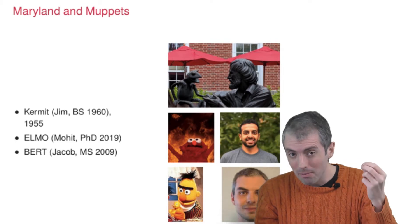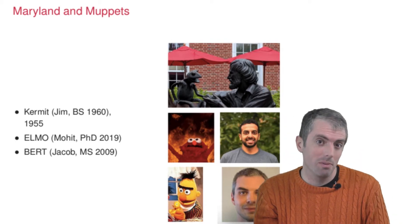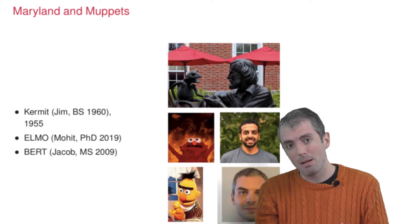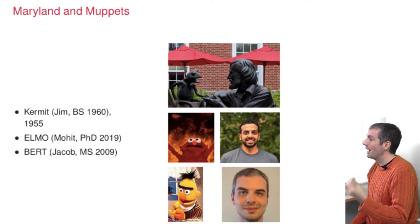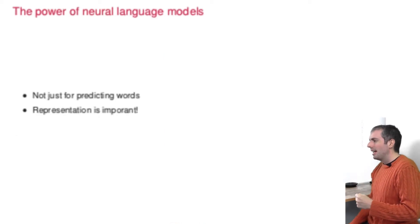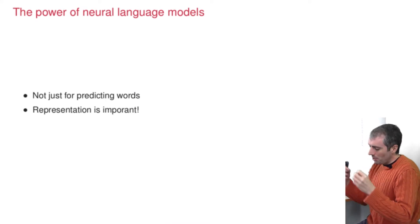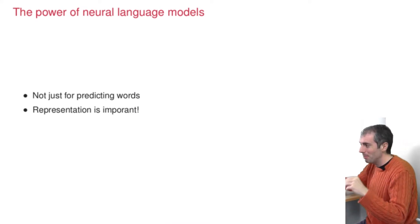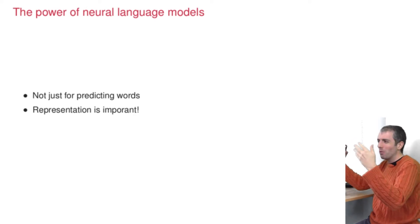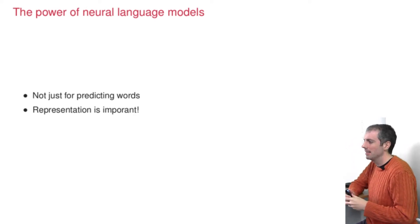The probably best known neural language model is BERT, continuing the Muppet naming trend. The first author on the BERT paper was Jacob Devlin, who graduated the University of Maryland in 2009. We'll talk more about why Muppets in a second, but first let's talk about why neural language models are such a big deal.